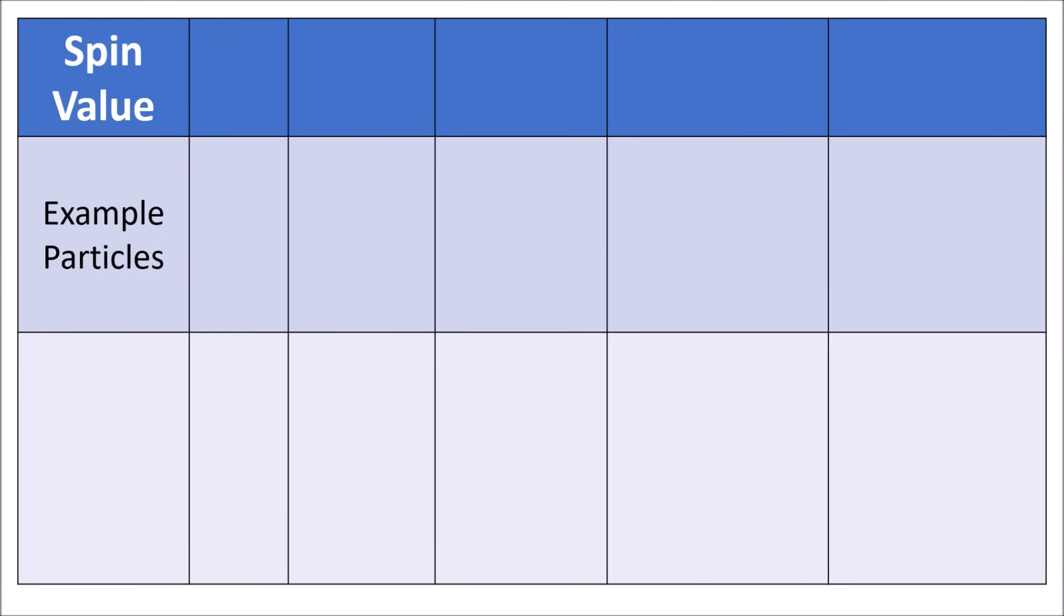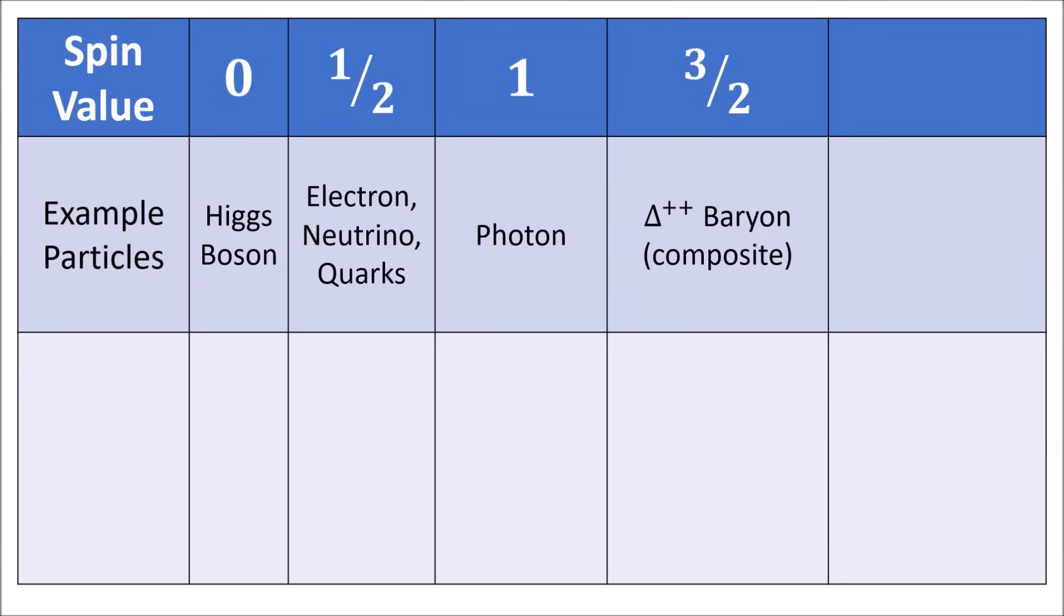In particle physics, each type of particle has its own spin value, with all known fundamental particles being either spin 0, spin 1/2, or spin 1. Composite particles can have higher spin, like spin 3/2, and the theoretical graviton has spin 2.